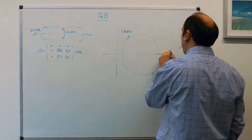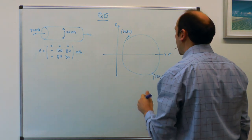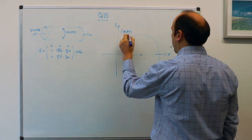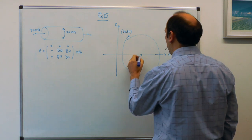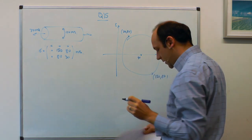This is our sigma axis, that's our tau axis. The center will be at the average of 150 and 30, so you add the two up, 180 divided by 2, you've got 90. That's the center.